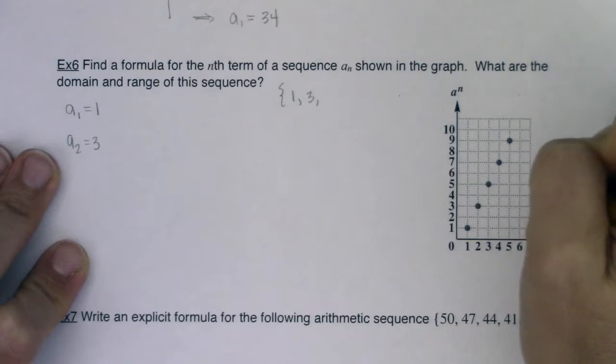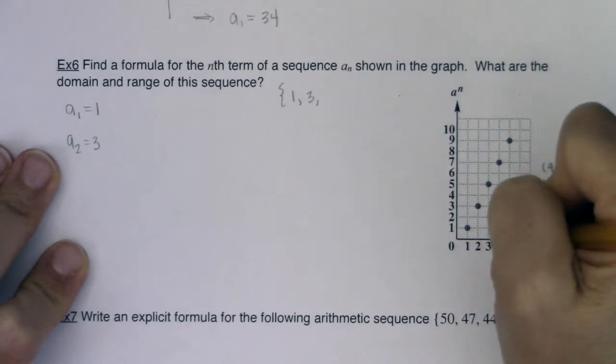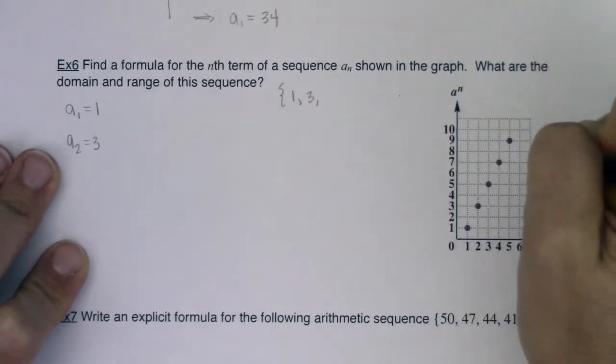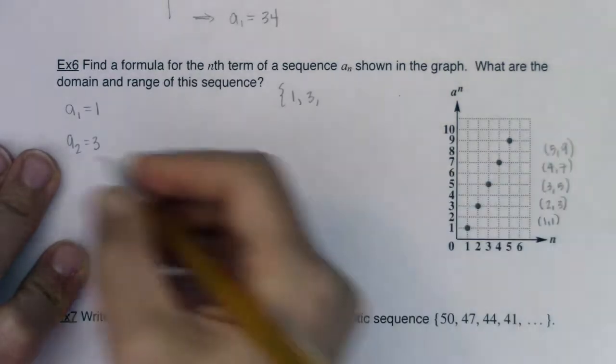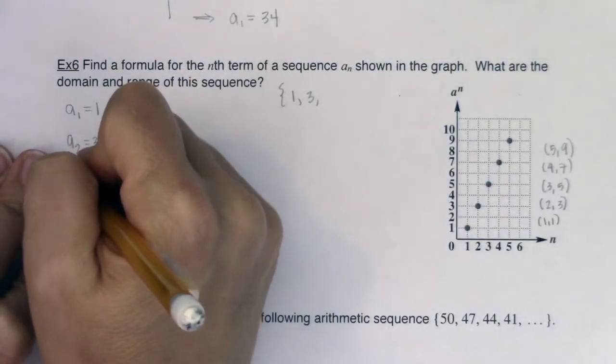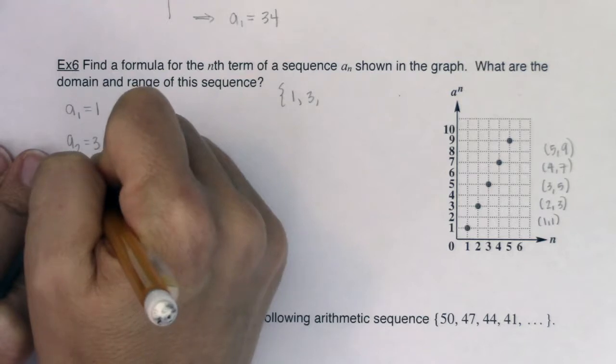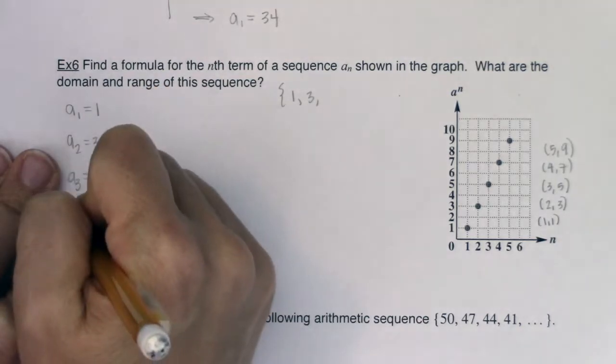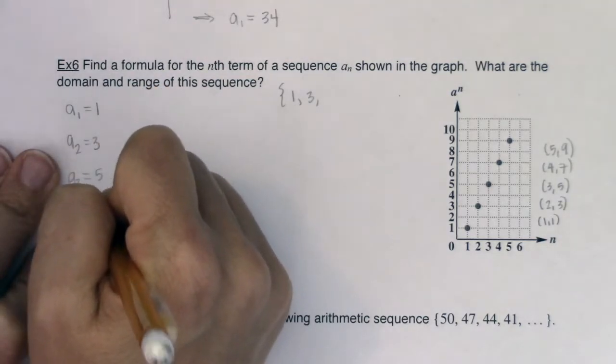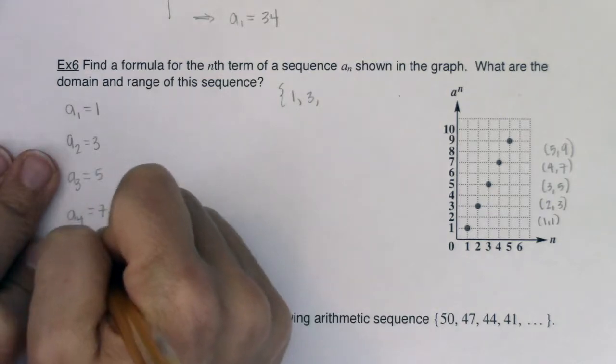Looks like we have 4, 7, and finally we have 5, 9. Let's take these ordered pairs and translate them into sequence terms. So a sub 3 is equal to 5, a sub 4 is equal to 7, and a sub 5 is equal to 9.